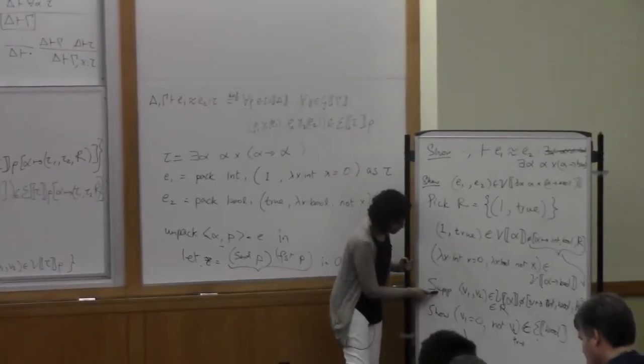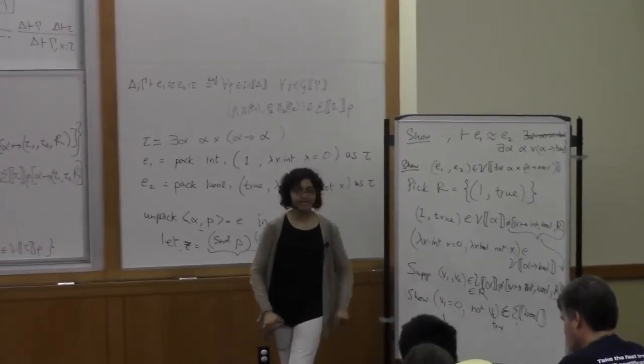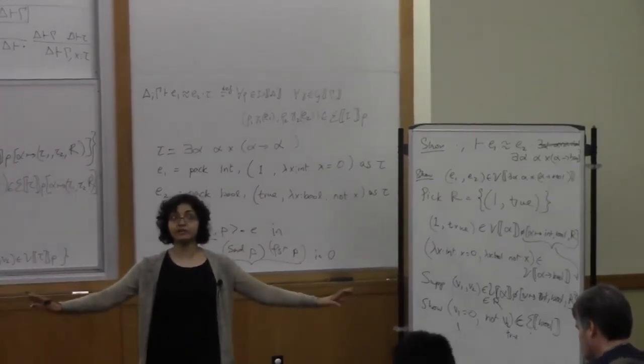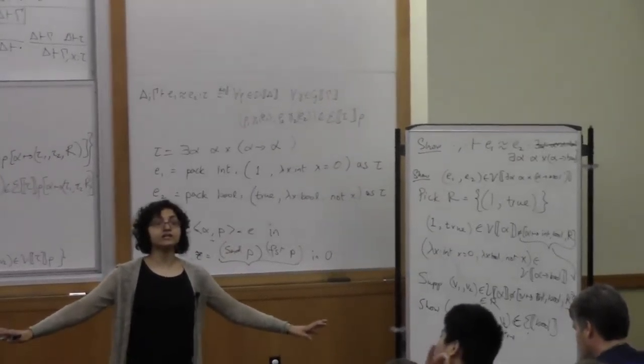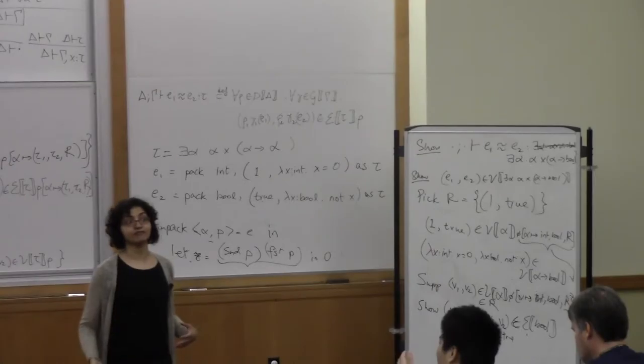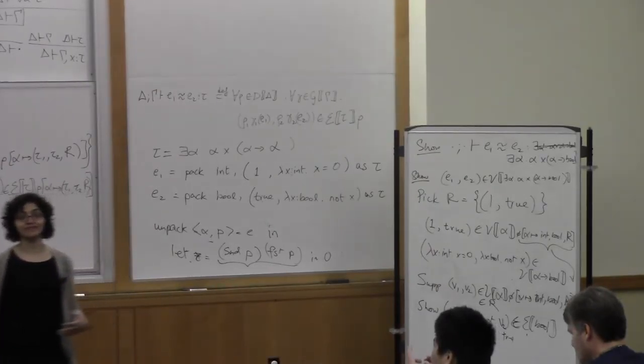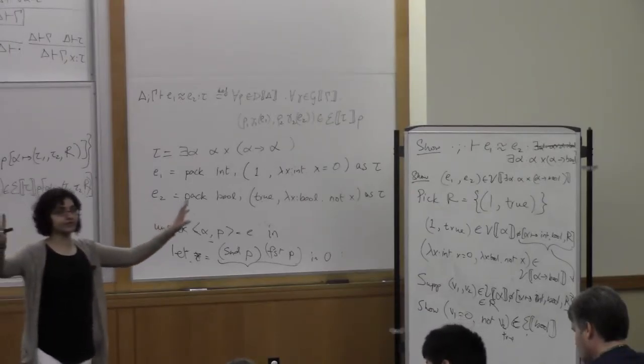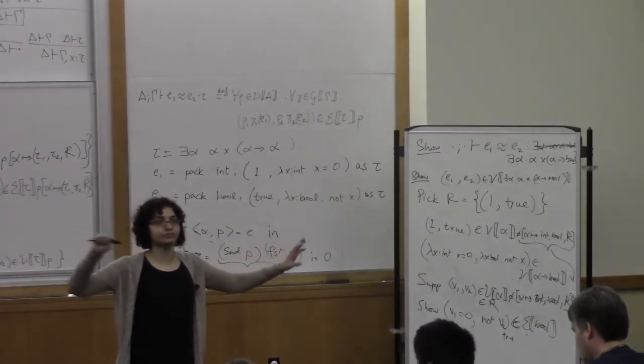It basically helped us at this point. At this point, we were forced to say, suppose that I have two arbitrary inputs for my function. Completely arbitrary. But they have to be related at the type alpha. So anytime the function definition says, you have to show two functions are related, you have to start by assuming that you have two arbitrary inputs that are related, and then show that your outputs are related.